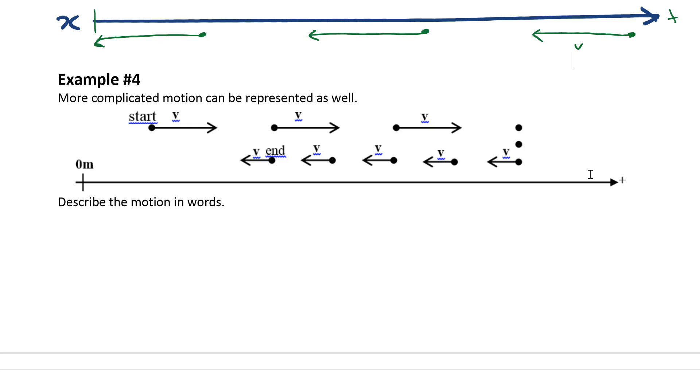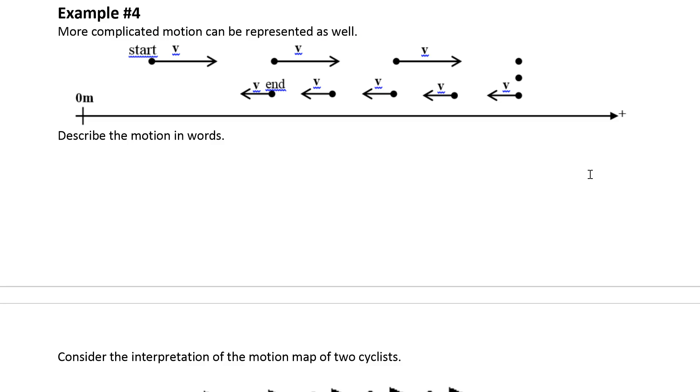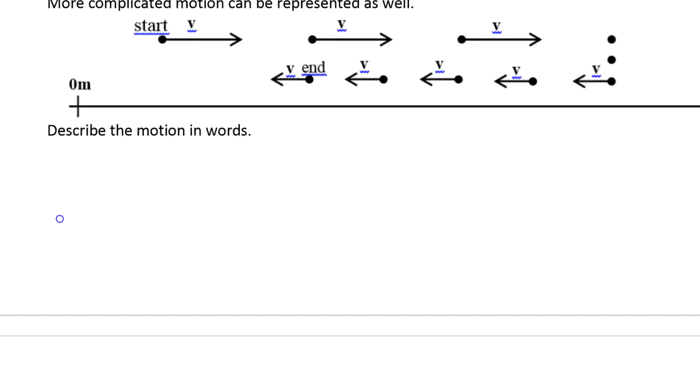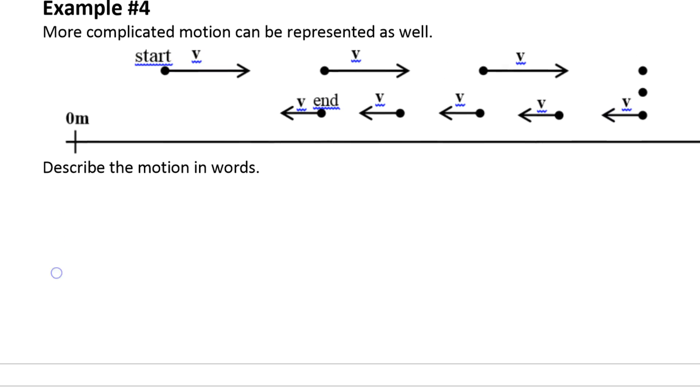Example number four. More complicated motion can be represented as well. Could we describe this motion in words? Well the first thing we could say is where are we starting at? The object starts not at the origin but someplace to the right of the origin.